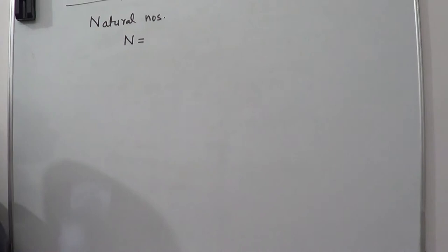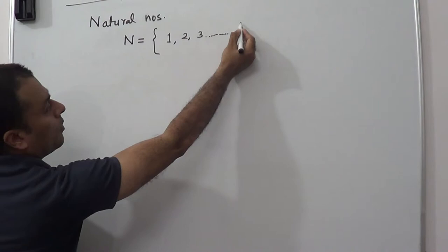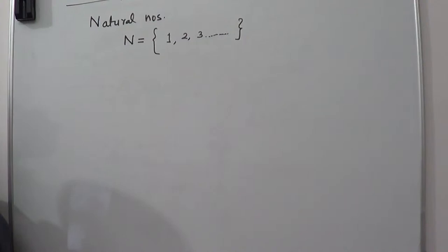Natural numbers are represented by capital N. It consists of all positive integers starting from 1, 2, 3 up to infinity.